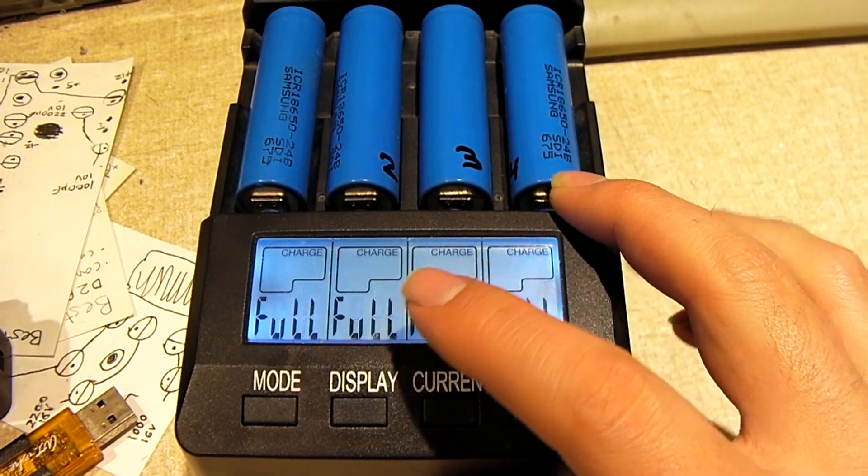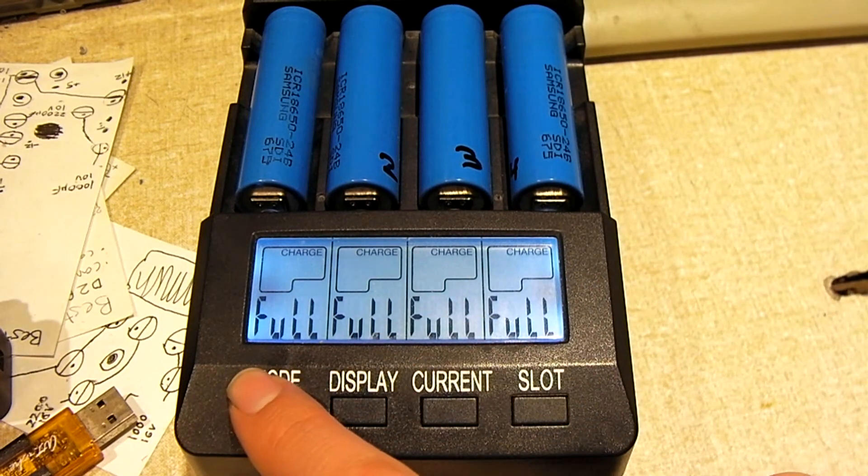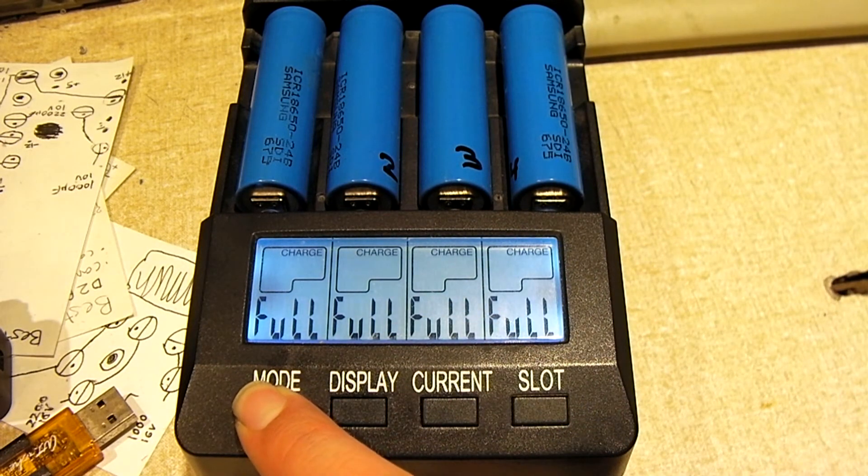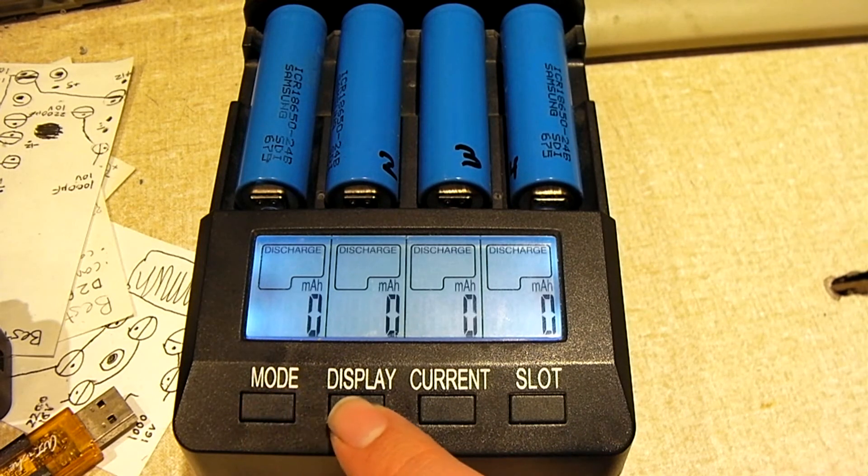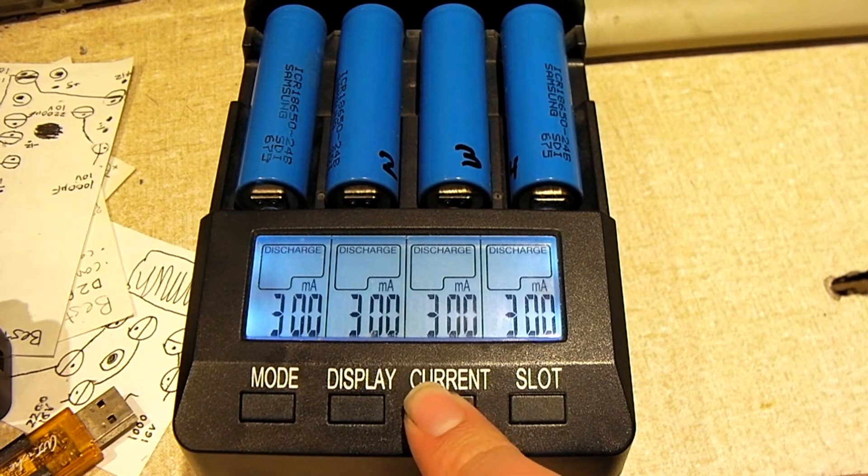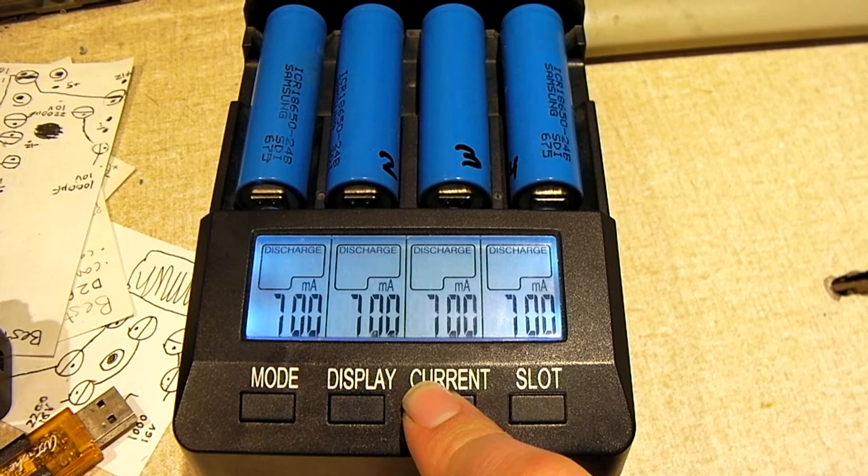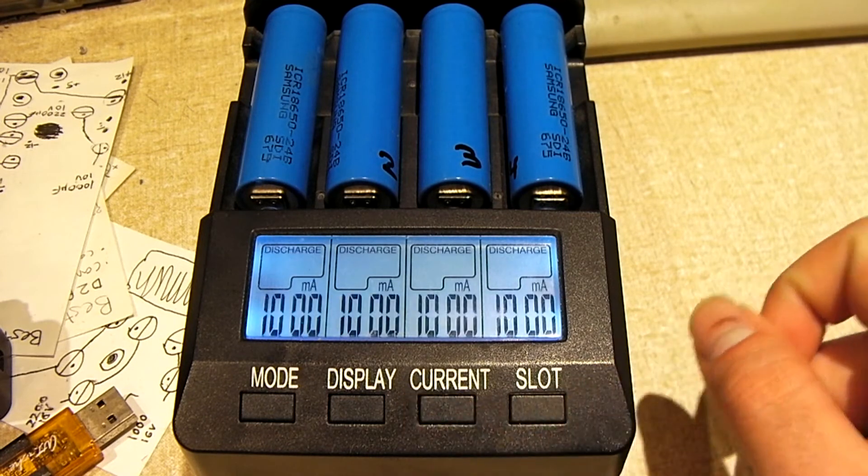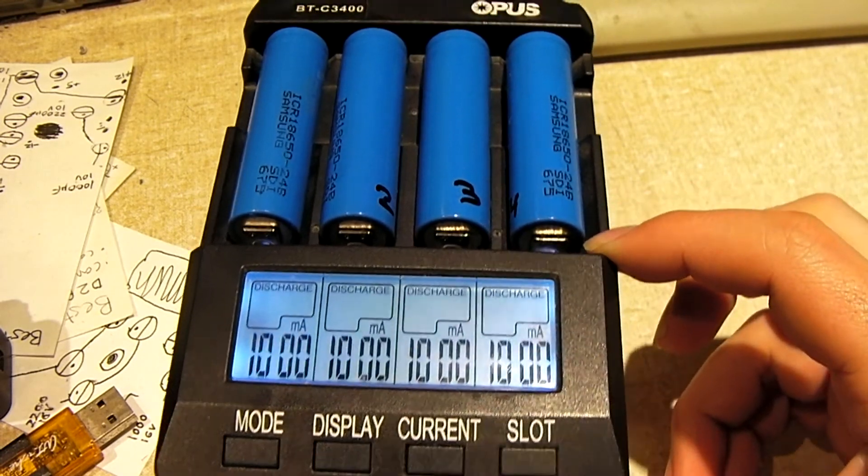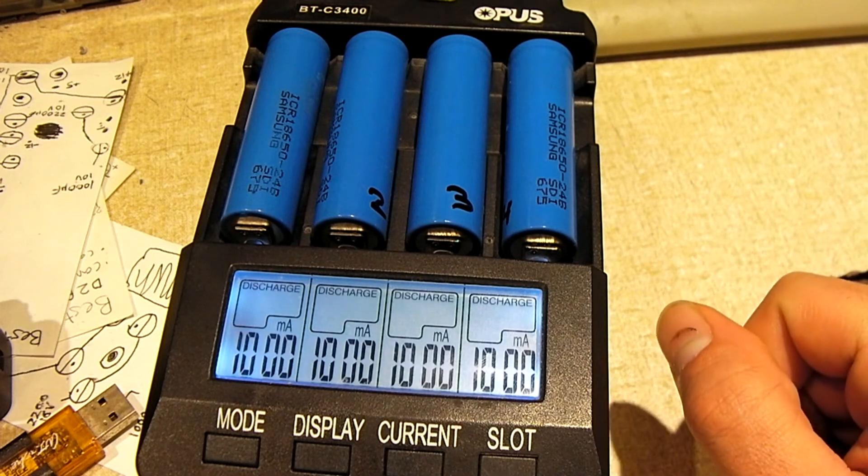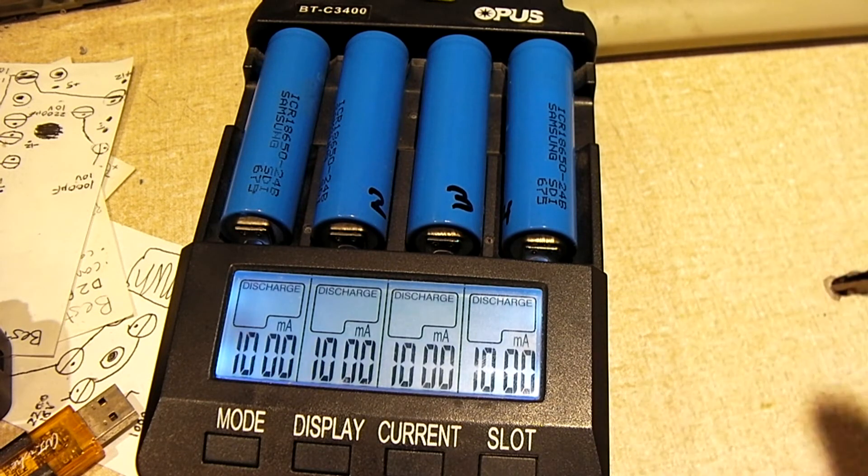Okay, so now we're going to go ahead and discharge these and see what we can get out of them. And what we'll do is we'll discharge them at one amp each. And we'll see what we get as far as capacity goes.